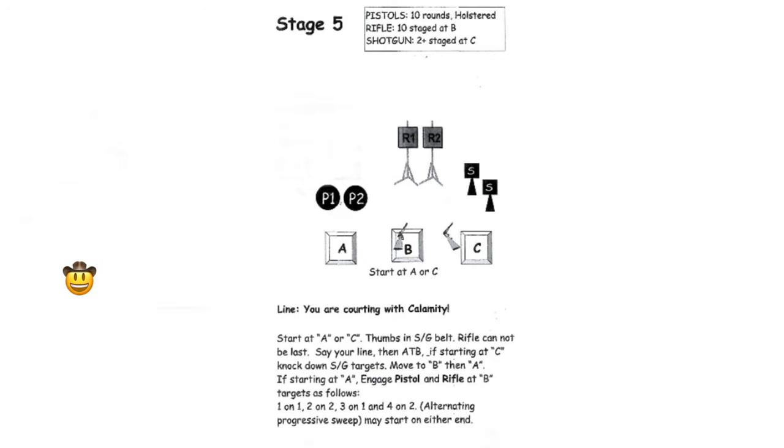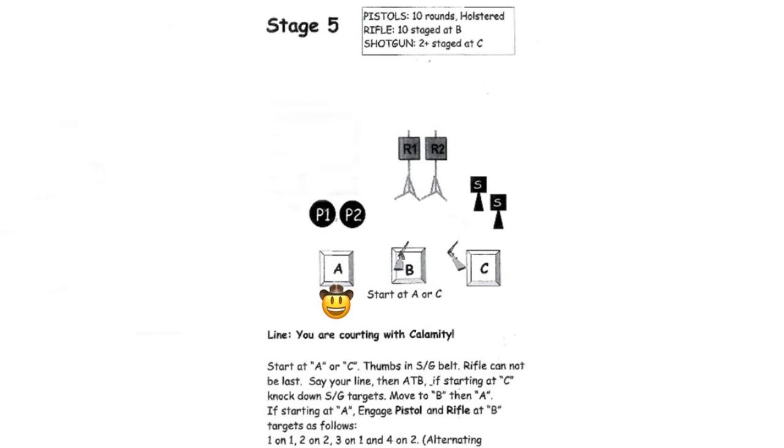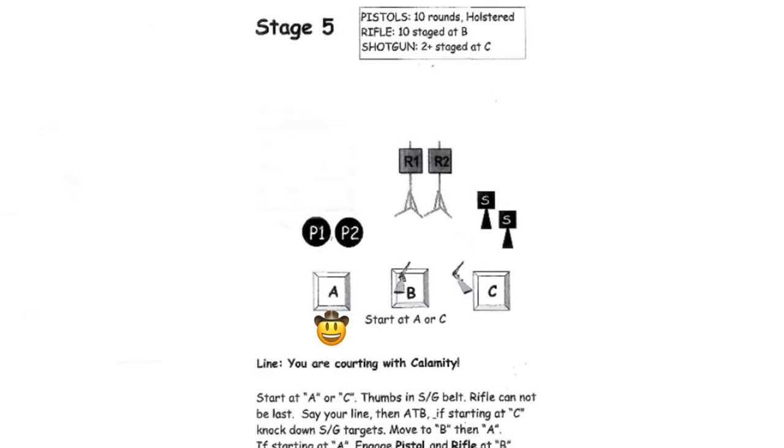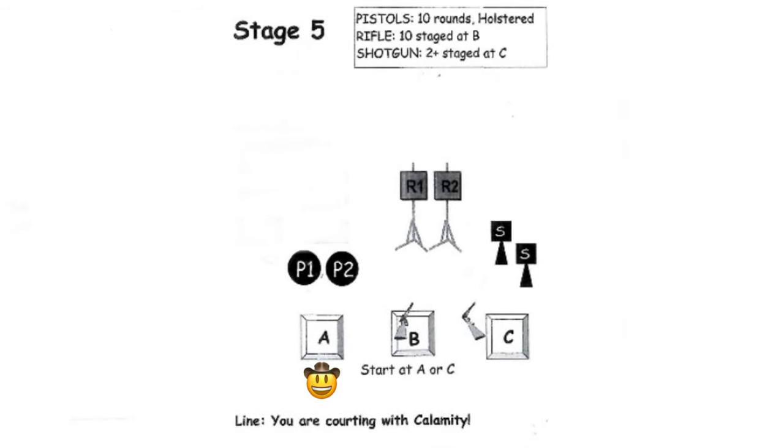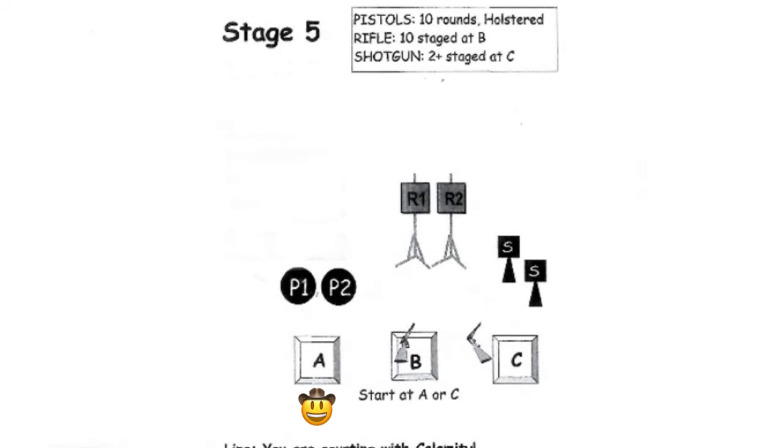Start at A or C with thumbs in shotgun belt. The firearms may be shot in any order as long as the rifle is not last. Indicate ready by saying the line, you are courting with calamity. At the beep...